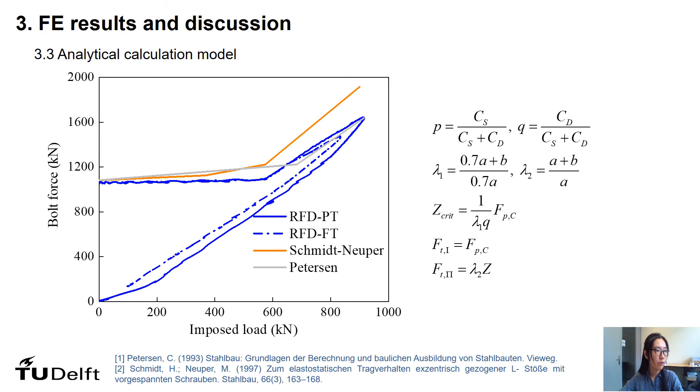The bolt force of FE results are compared to two widely accepted methods for determination of the bolt force with regard to the applied segment load. These models are proposed based on the research of ring flange connections without defined surface area. A simplified model for ring flange connections with defined surface area is proposed combined with two models. The proposed model can determine the development of bolt force within connections with defined surface area accurately as shown by the red curve.